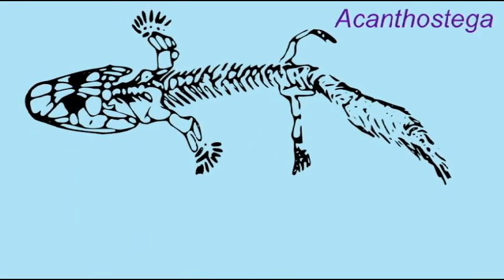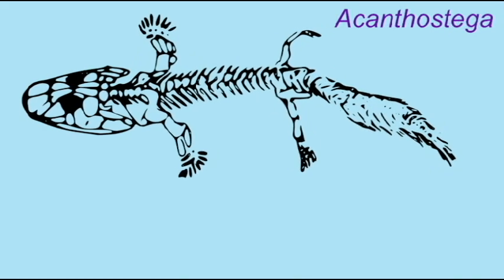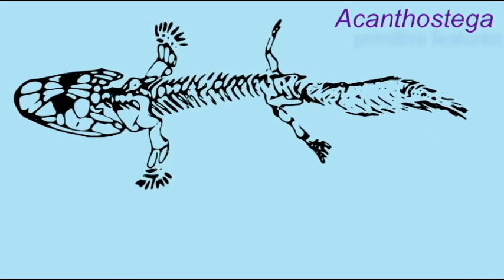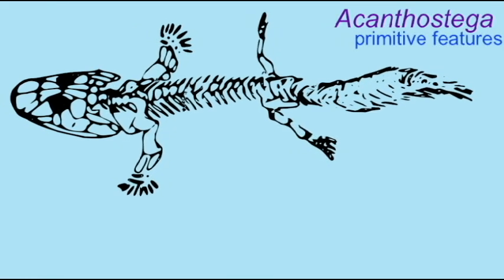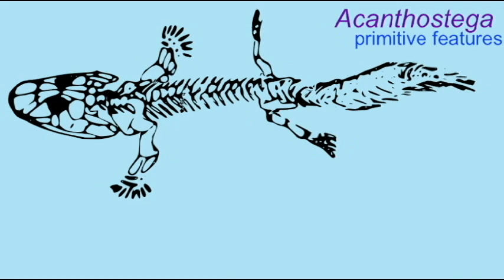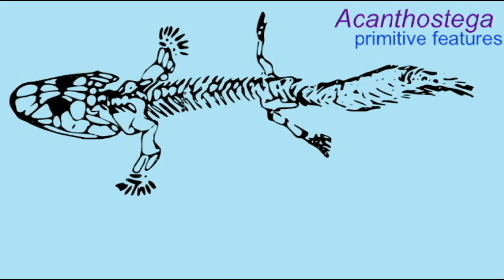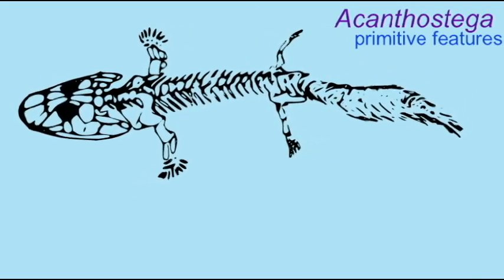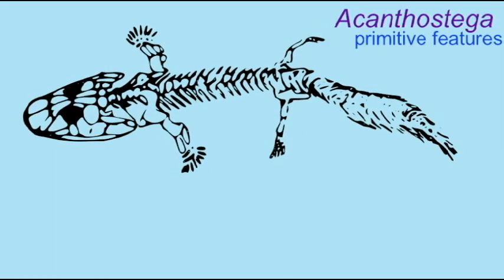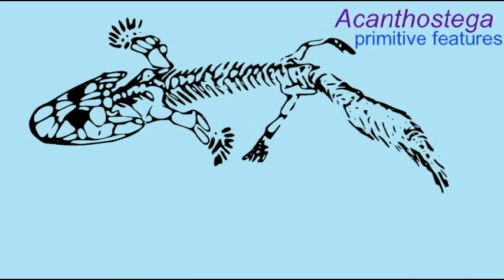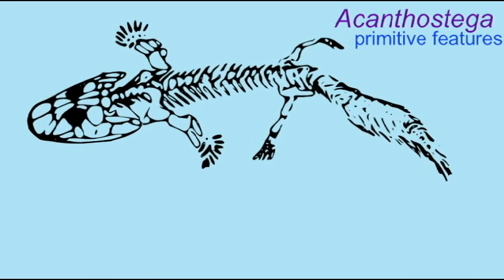Although Acanthostega is a tetrapod — an amphibian — it possessed a number of primitive features which are not known in any modern amphibian but which were present in the Sarcopterygian fish from which Acanthostega evolved. For example, the presence of internal gills is inferred from the presence of opercular bones and gill supports. There was the opening for the notochord in the back of the skull, and as a result, the neck was not very mobile.